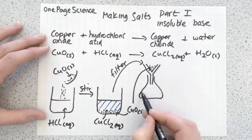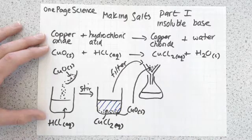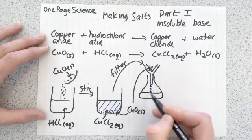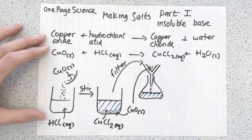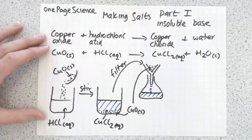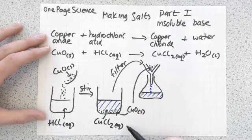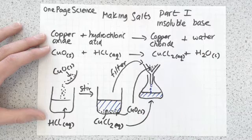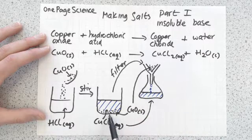And then what you're going to be left with in the bottom of your conical flask is your nice pure copper chloride solution. So in there now is your copper chloride solution, but all the bits of black solid have been left in your filter paper.